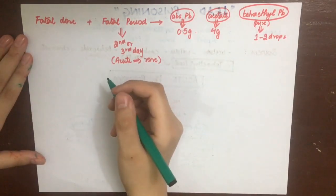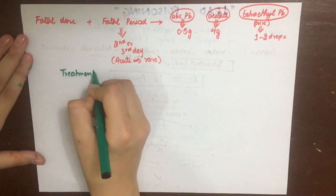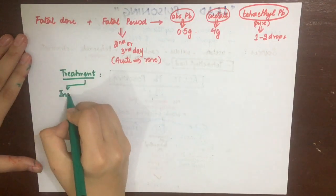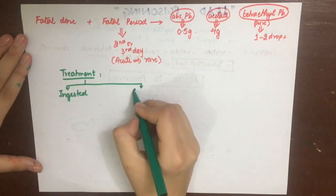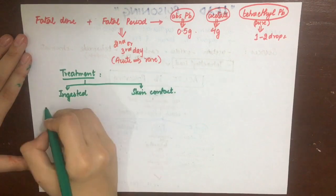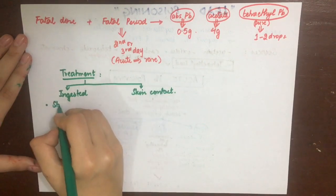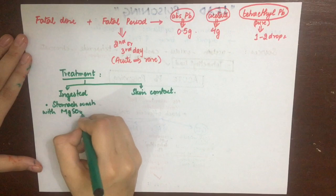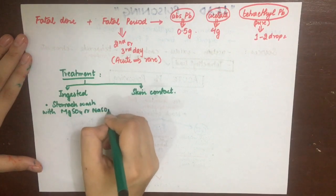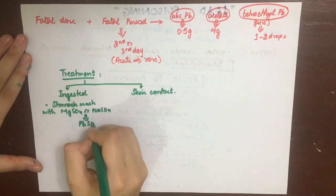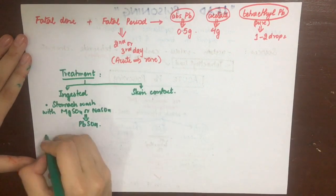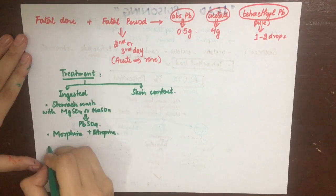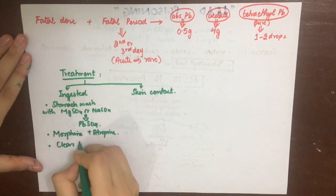In a case of acute poisoning, treatment involves two things. If the poison is ingested, we do a stomach wash with a one percent solution of magnesium or sodium sulfate, which will convert the lead into lead sulfate and wash it out with ample water. Morphine and atropine are given for the painful colic.